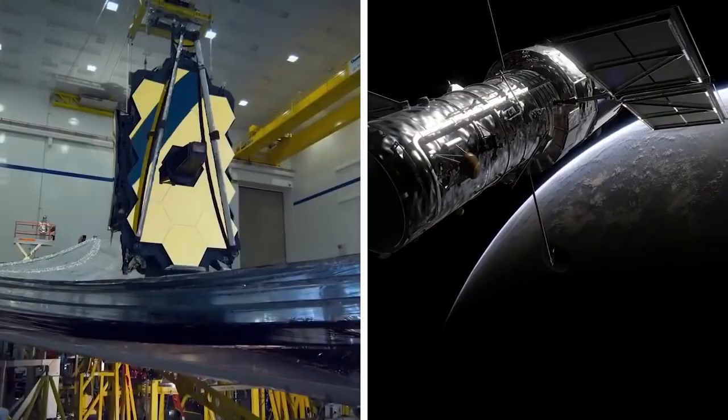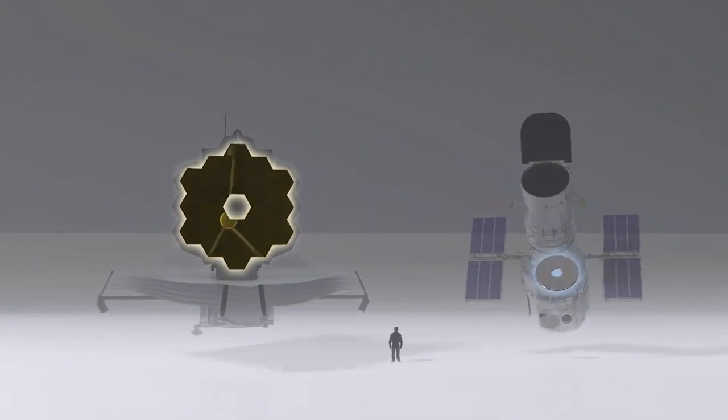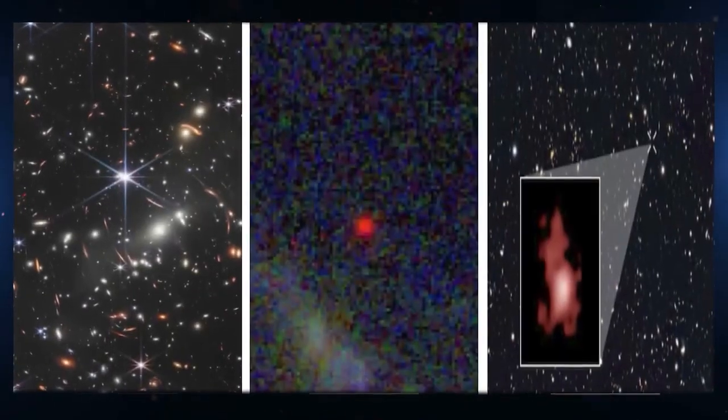Astronomers can see even further into space with Webb because it is a hundred times more powerful than Hubble. Webb's first few months of observations have shown that it can take the most beautiful pictures of the universe ever taken.